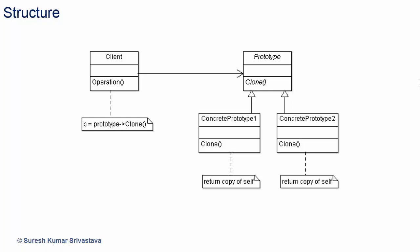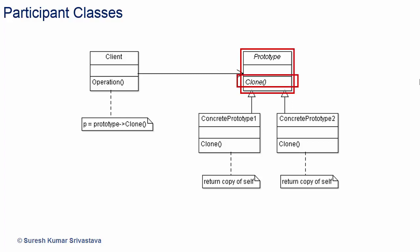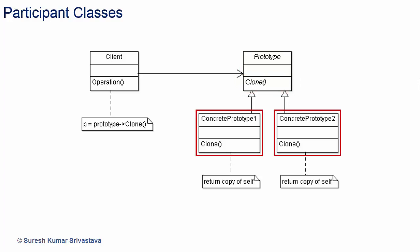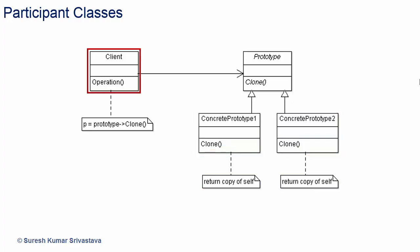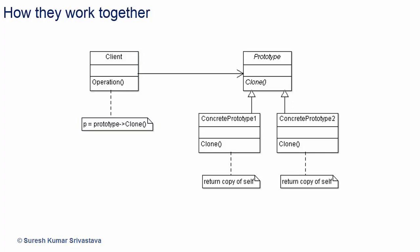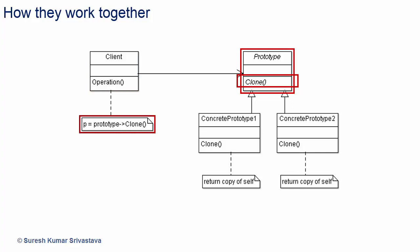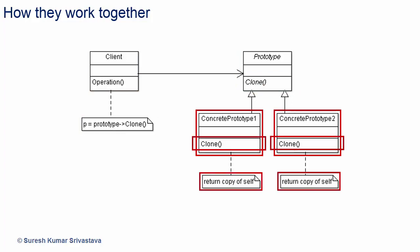Let's see the structure of the Prototype design pattern, which gives good understanding of participant classes, their relationships, and how they work together. We have an abstract class prototype with abstract method clone to provide an interface for cloning. Concrete prototype 1 and concrete prototype 2 implement the clone method to copy the object of self. The client has a prototype instance and uses its clone interface to clone the prototype object. Concrete prototype classes clone their respective object and return it to the client, creating new objects by copying the prototype.